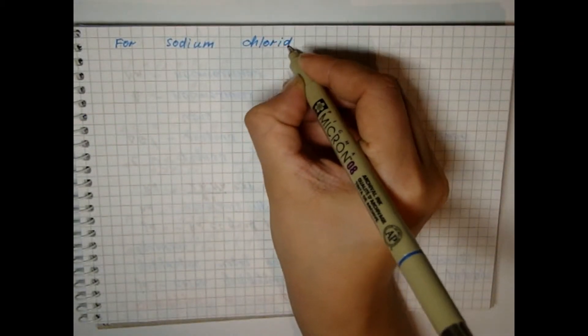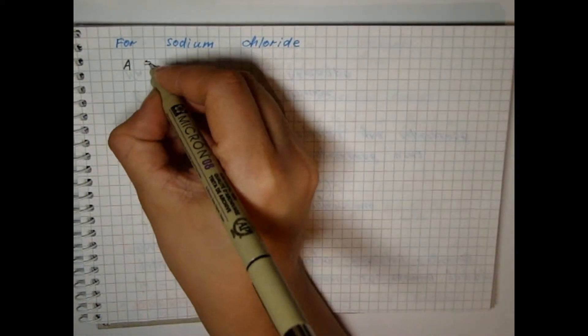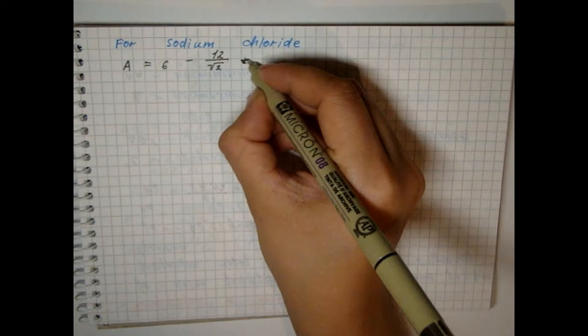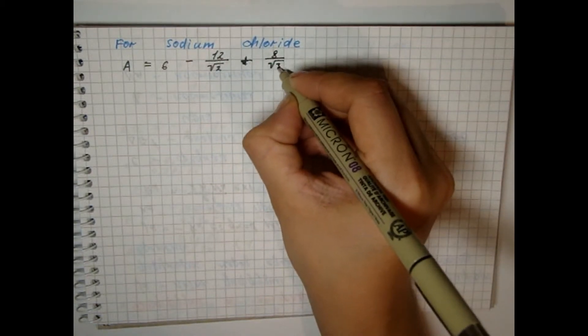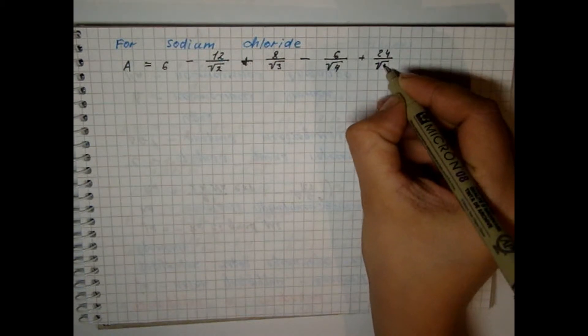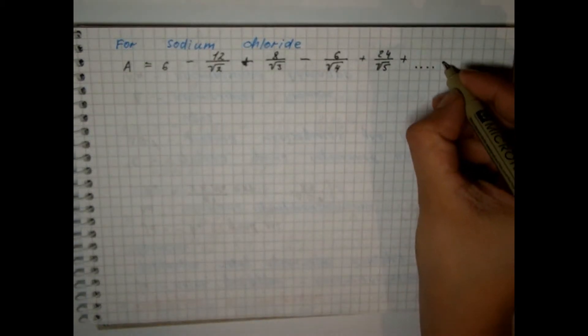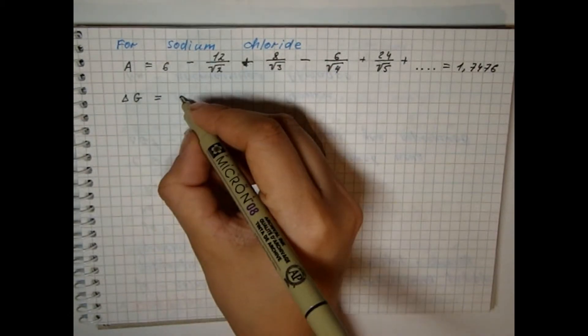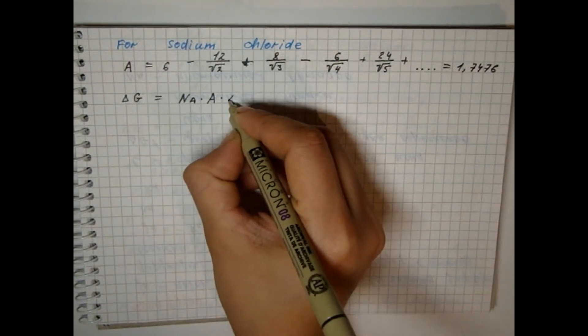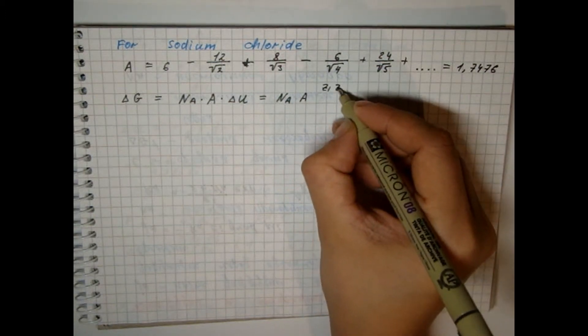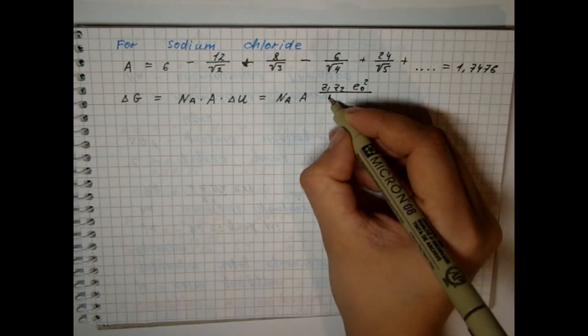Thus, the Born model, which relates the free energy of the crystal lattice to the potential energy of interaction of the ions that form it, leads to the formula.